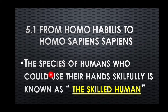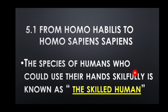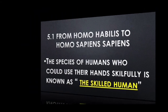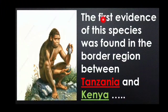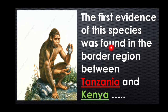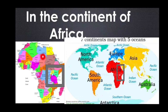The species of humans who could use their hands skillfully is known as the skilled man. The first evidence of this species was found in the border region between Tanzania and Kenya, in the African continent. The border region of these two places is where the first species of the skilled man was located.